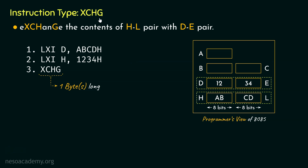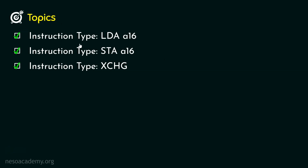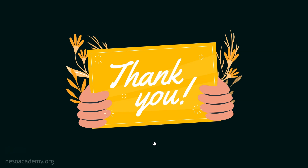That's all about the XCHG instruction type. Remember, it will only work with the HL pair and the DE pair. So in this session we covered: instruction type LDA A16, instruction type STA A16 — these two instructions are three bytes long and are specific to the accumulator register. Finally, we learned about the instruction type XCHG, which falls under the one-byte long category and only works with the HL and DE register pairs. In the next session we are going to learn something called the register codes, and that's going to be a very interesting session. Thank you all for watching.